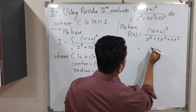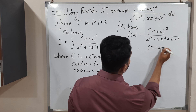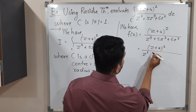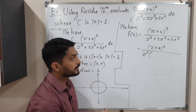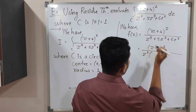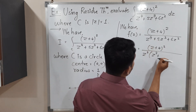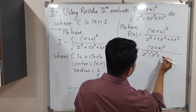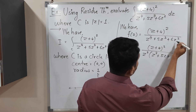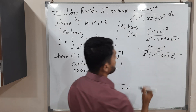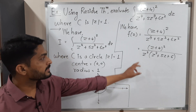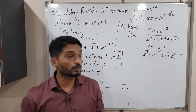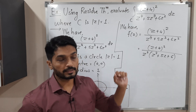What can we take common from the denominator? Obviously z². Taking z² common from z⁴ gives z², from 5z³ gives 5z, and from 6z² gives 6. So we have z² × (z² + 5z + 6) in the denominator. Now we need to find the factors of that degree-2 polynomial.